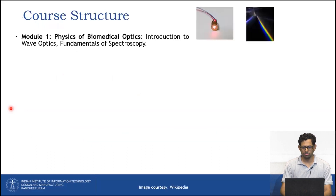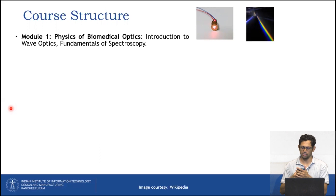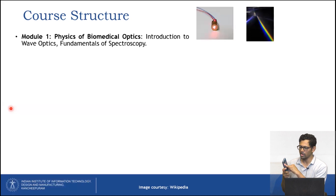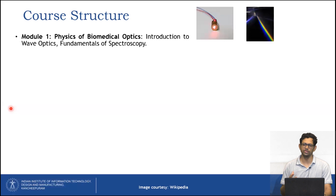The course structure begins with a first module on the physics of biomedical optics — how light actually interacts with tissue. For example, if you shine a torch on your finger, you see a red color. The reasoning behind this formation of red color is what we will learn. We will not just cover theory but also do a few experiments to help you understand and appreciate biomedical optics.